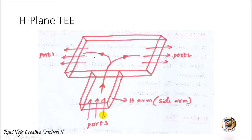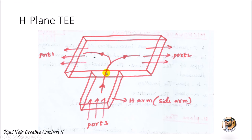Port 3 is considered as the H arm, which we can also call the side arm. Port 1 and port 2 are considered as the output ports through which the microwave signal is distributed. In the H-plane T junction, port 3 (the H arm) is taken as the input port, and port 1 as well as port 2 are considered as the output ports.